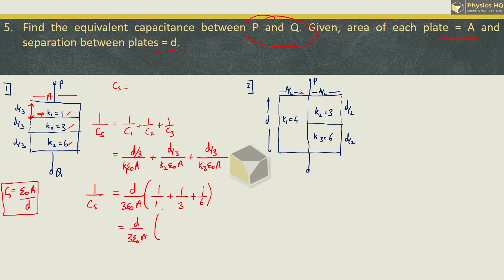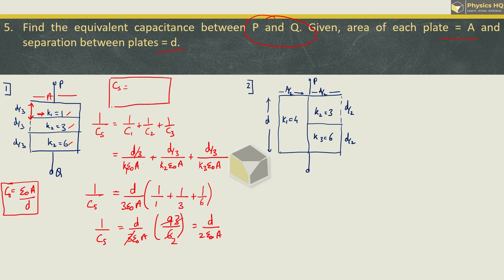Taking LCM of 1, 3, and 6, we get 6. In the numerator we have 6 plus 2 plus 1, which is 9. Simplifying: 3 threes are 9 and 3 twos are 6, so we are left with D upon 2 epsilon naught A. This is 1 by Cs. Therefore the equivalent capacitance Cs equals 2 epsilon naught A by D.